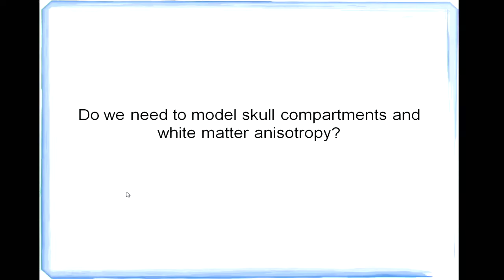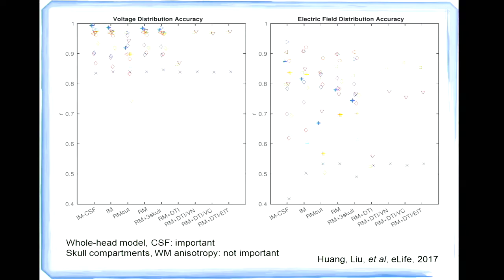And the last question we can answer based on the recording data is all these controversial issues in the modeling process. Because we have this recording data, we can use it as a ground truth to test different modeling parameters. Like, should we model different skull compartments? Or should we model the white matter anisotropy? So we basically built different categories of models like models including the CSF or without a CSF. And models that's cut off around the nose, because most clinical MRI scans are just cut off around the nose. And models covering the entire head.